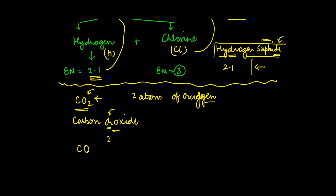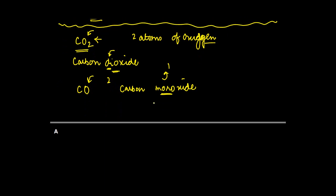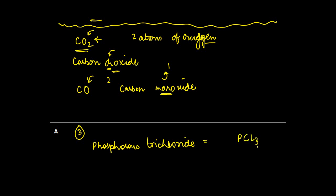If we had CO, where only one atom of oxygen is present, we would use the word carbon monoxide — 'mono' means one. Another example is phosphorus trichloride, written as PCl3. There are three atoms of chlorine, so we use the prefix 'tri', giving us trichloride.